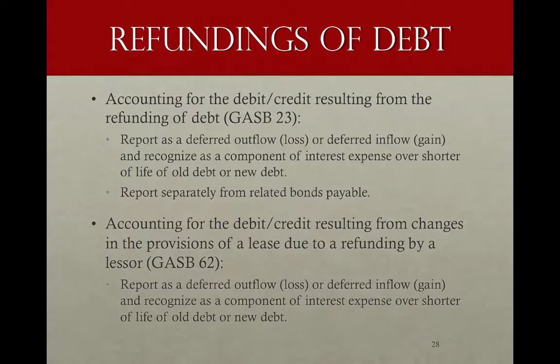Under GASB Statement 23, gains and losses from refundings of outstanding debt are reported as debits or credits in the financial statements as assets or liabilities. Statement 65 says that losses should be reported as deferred outflows, gains on the refunding should be reported as deferred inflows, and then recognized as a part of interest expense over either the shorter of the life of the old debt or the life of the new debt. They should, however, be reported separately from the related bonds payable.